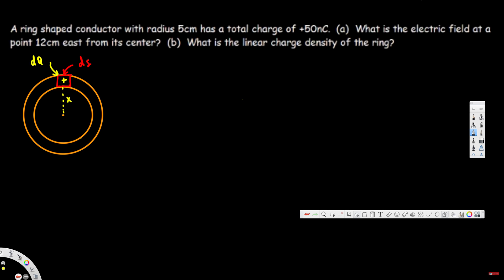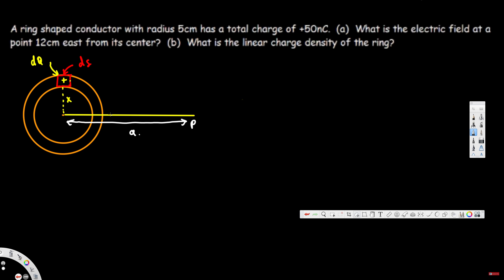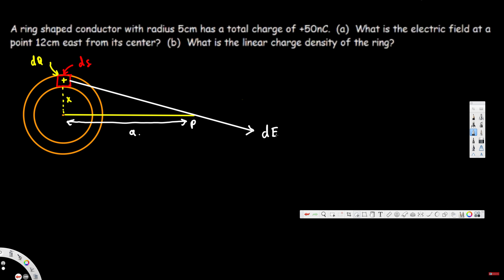This small segment will cause an electric field at the point of interest. Point P is 12 centimeters from the center on the east side. The electric field caused by this charge passes through point P. Since this is a positive charge, the electric field moves away from it. Let's call this dE. This dE has two components: an x-component dEx and a y-component dEy.